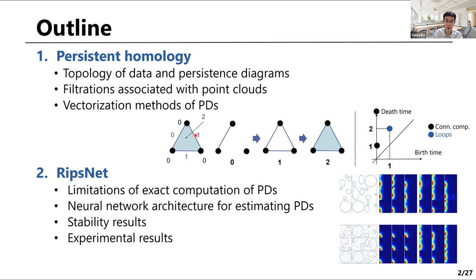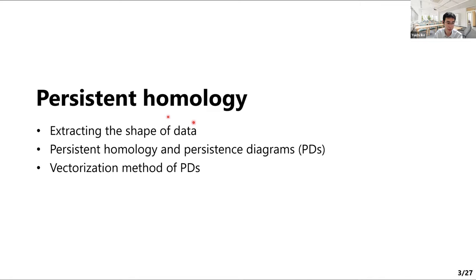The outline of my talk: first I will talk about persistent homology, and consider how to extract the topology of data as what is called persistent diagrams. We are especially interested in point cloud data, so I will explain some filtrations associated with point clouds, and also discuss some vectorization methods of persistent diagrams. In the second part, which is the main part, I will explain our LipsNet — after explaining two limitations of exact computation of persistent diagrams, we introduce a neural network architecture for estimating persistent diagrams, show stability properties, and present experimental results.